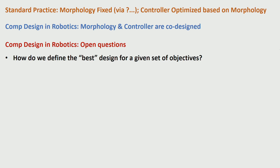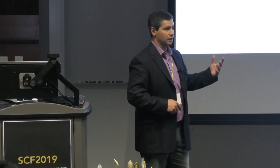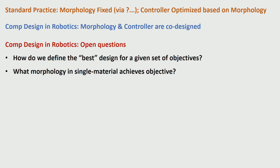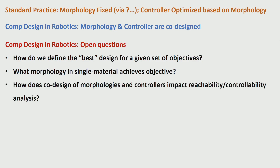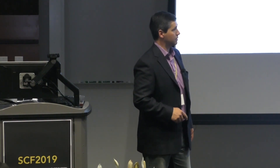If you have single-objective design, there are many families of optimization tools which allow us to choose the best design in a truly optimal way. But if you have a multi-objective set of things you care about, you're now in a Pareto-optimality design optimization sense. How do you choose what the best design is? What kinds of tools do we need to develop to help us understand the complexity of designs possible using multiple objectives and many different materials? What can we say about reachability or controllability when co-designing morphologies and controllers? If you have a fixed morphology we know a lot, but if you don't know the morphology a priori, what can we say about reachability and controllability?